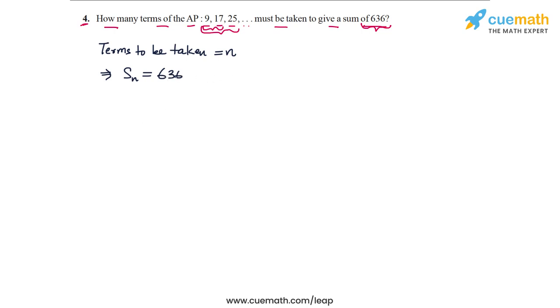We are going to use the relation for Sn in terms of A, N, and D. So Sn, or the sum of n terms, can be written as N by 2 into 2A plus N minus 1 into D.